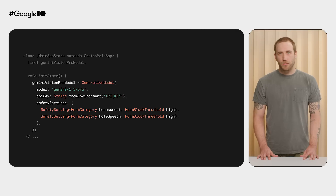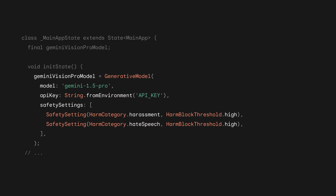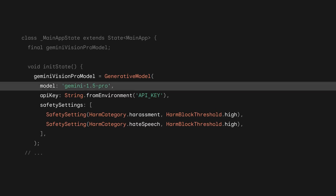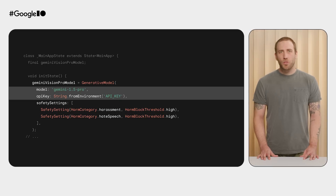The setup code looks like this. I added this code in the init state method of the app's top-level widget. This code is creating a new instance of a generative model object, which knows how to communicate with the Gemini API. The constructor for the generative model class expects the name of the Google LLM you're passing in, such as Gemini 1.5 Pro, as well as your API key. Finally, this code attempts to get your Gemini API key using the string from environment method, which is part of the Dart core library. This method expects that an environment variable called API key will be passed in when the app starts running.